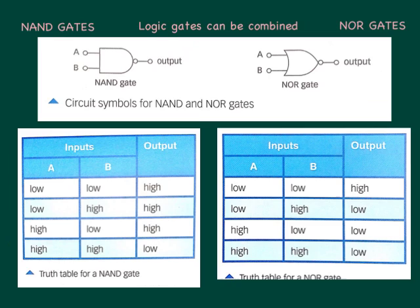So for higher tier, you need to know about two further logic gates, the NAND gate and the NOR gate. Now logic gates can be combined. So a NAND gate is simply a combination of an AND gate and a NOT gate. Notice the difference in the symbols is simply this circle at the front of the symbol. Now a NOT gate simply makes the output opposite to the input. So by combining a NOT gate with other logic gates, you simply are making the outputs opposite to what they would be.